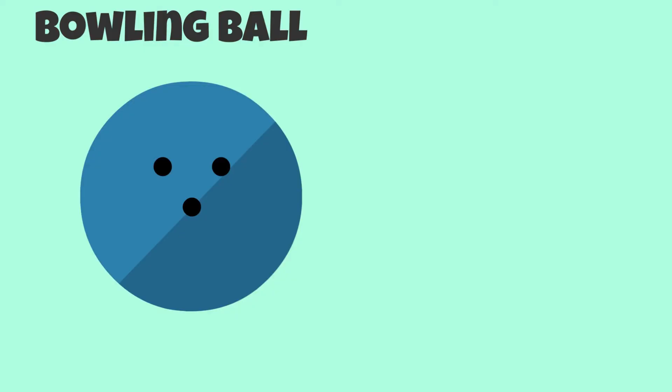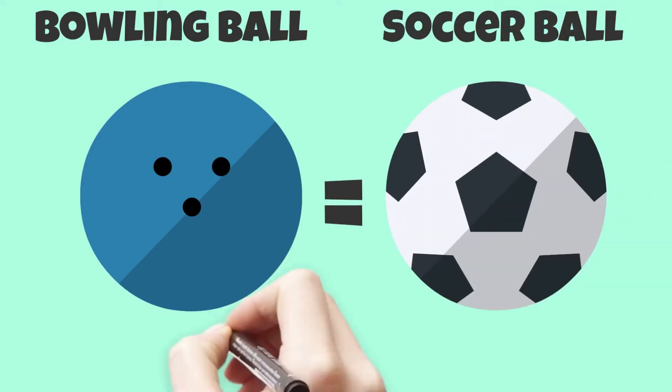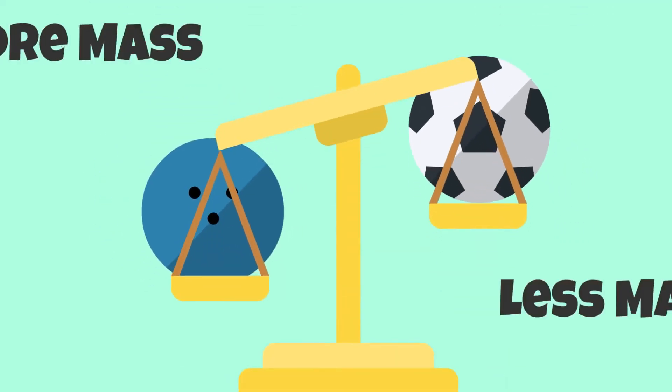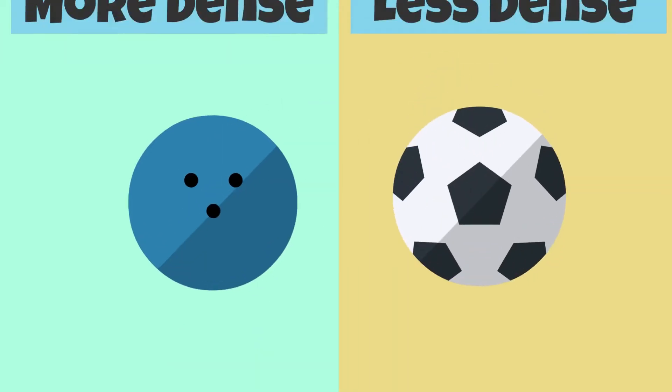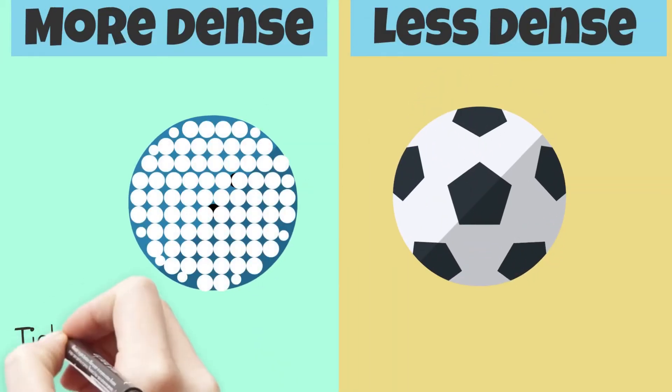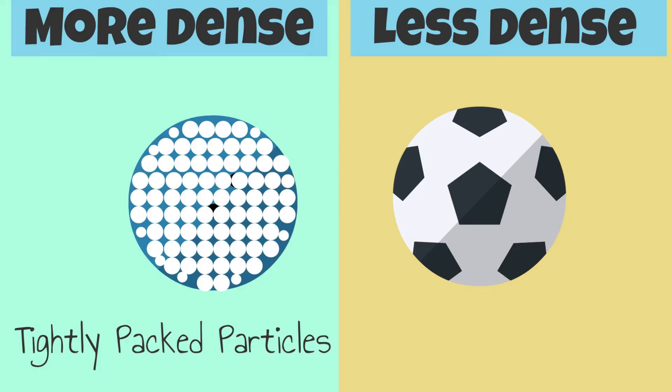Both a bowling ball and a soccer ball have the same volume. They both look like they take up the same amount of space, but a bowling ball has more mass than a soccer ball. That's because the particles in a bowling ball are more compact or packed tightly.